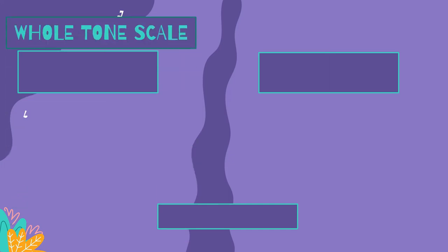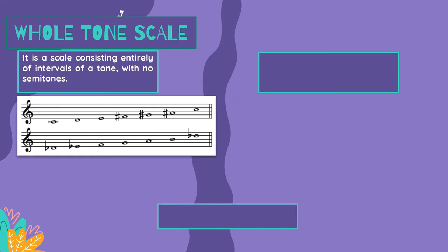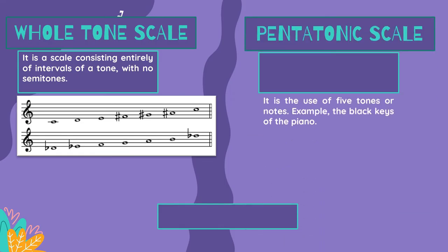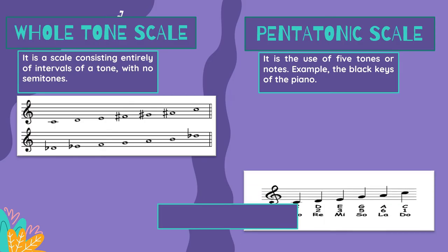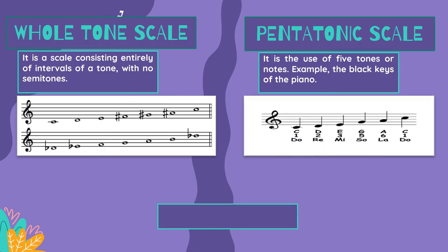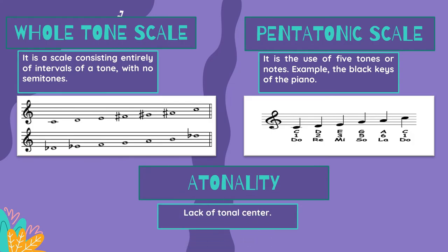Important things to remember in Impressionism music: the Whole Tone Scale, which is a scale consisting entirely of intervals of a tone with no semitones; the Pentatonic Scale, which uses five tones or notes, such as the black keys of the piano; and Atonality, meaning the lack of a tonal center.